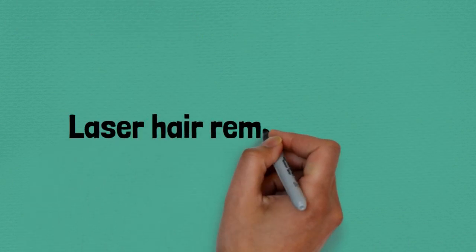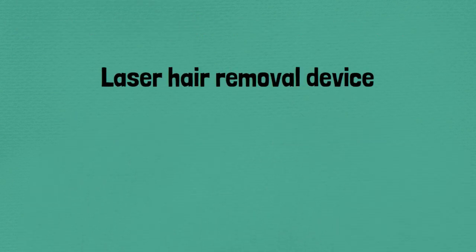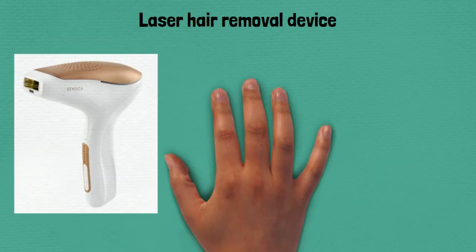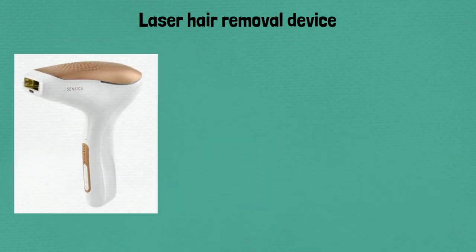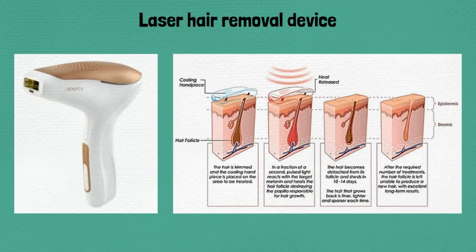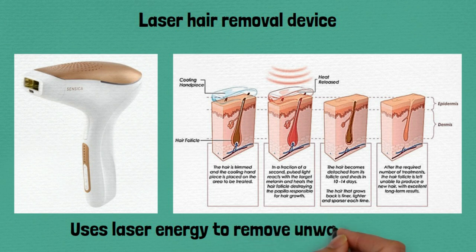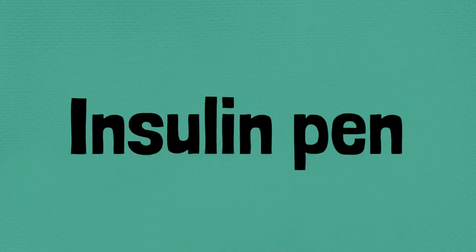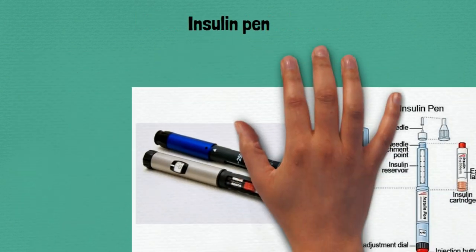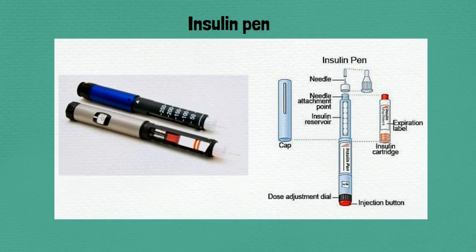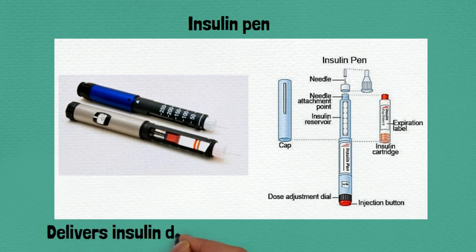Ninety-four: laser hair removal device, uses laser energy to remove unwanted hair. Ninety-five: insulin pen, delivers insulin doses for individuals with diabetes.